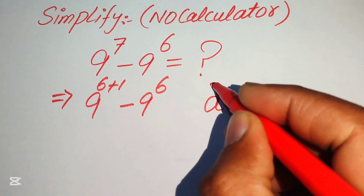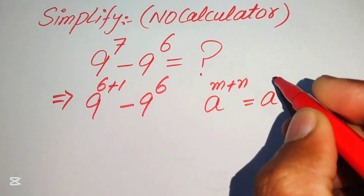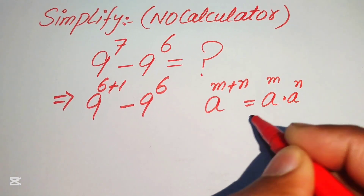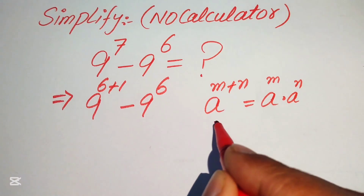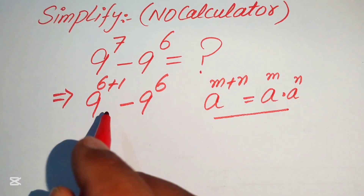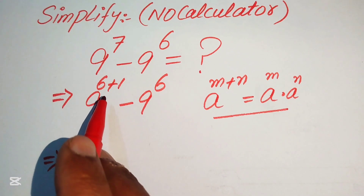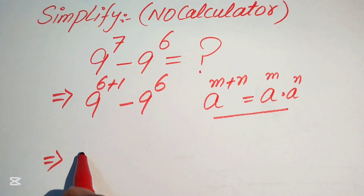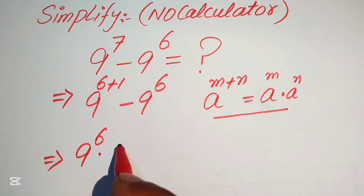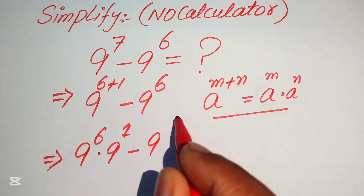Now we apply the exponent law: a to the power of m plus n equals a to the power of m times a to the power of n. We apply this to the first term, breaking the exponent so it becomes 9 to the power of 6 times 9 to the power of 1, minus 9 to the power of 6.